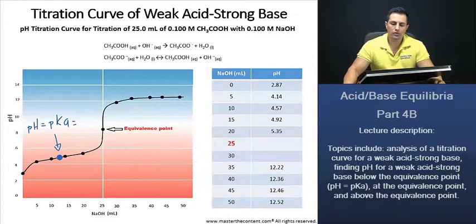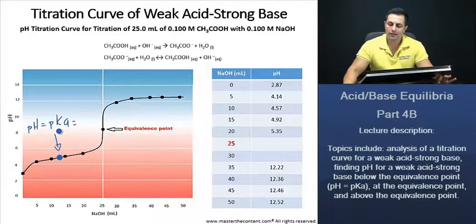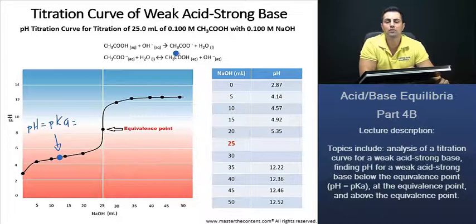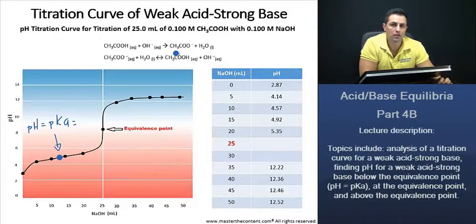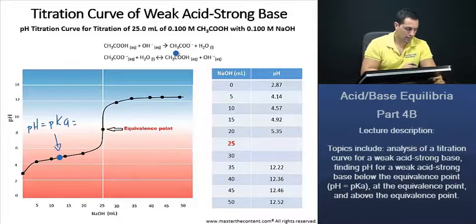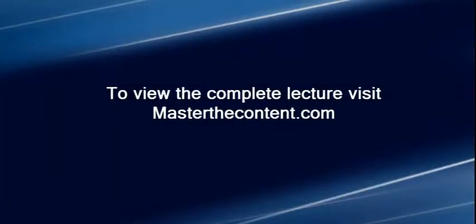And that there is called the half equivalence point. And we're going to demonstrate now that how at the half equivalence point, the pH equals that pKa. And at that point, it will be a buffer solution of the acetic acid and the acetate. And recall for buffer solutions in the previous lecture, we said we can call upon the Henderson-Hasselbalch equation, and we'll use that to demonstrate that pH equals pKa on the next slide.